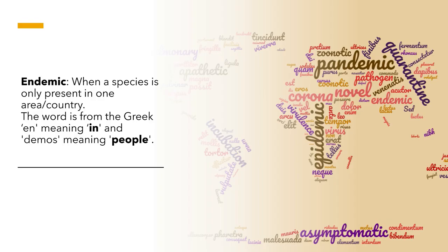I thought I'd throw in the word endemic, because you sometimes hear it and might think it's linked to diseases — but it's actually not, particularly. Endemic isn't just about diseases; it's more about when a species is only found in one area or country. An endemic species is a plant or animal you only find in that particular area. Nothing to do with an epidemic — it causes some confusion because people think endemic means epidemic.